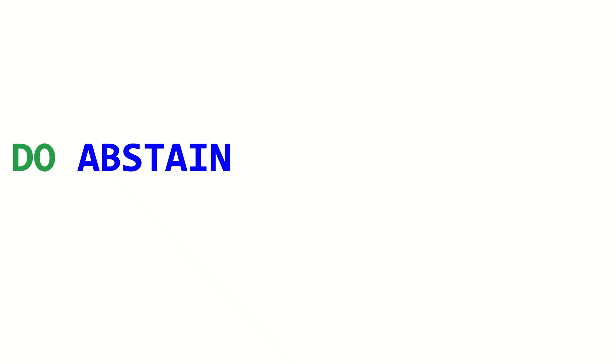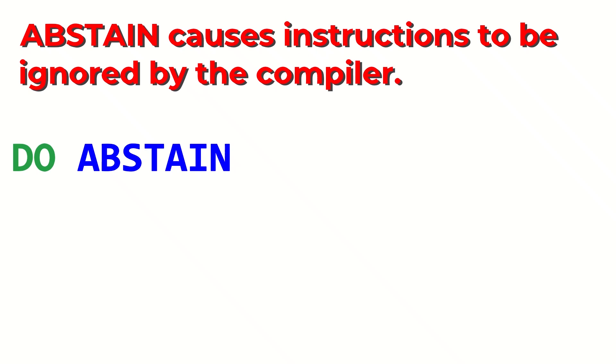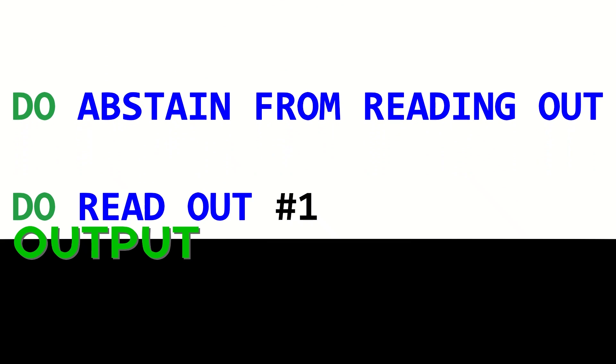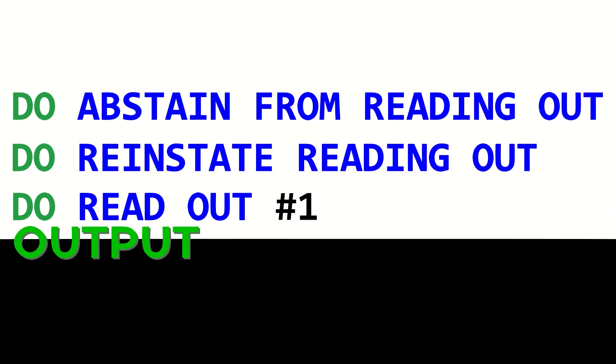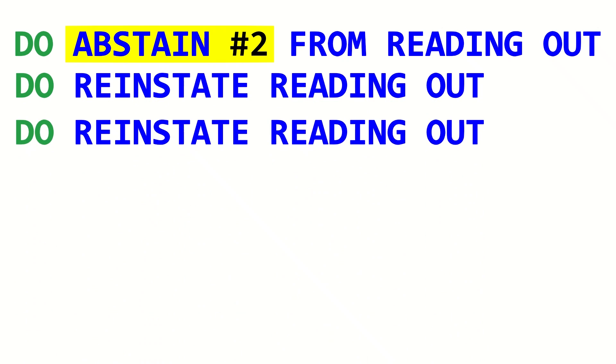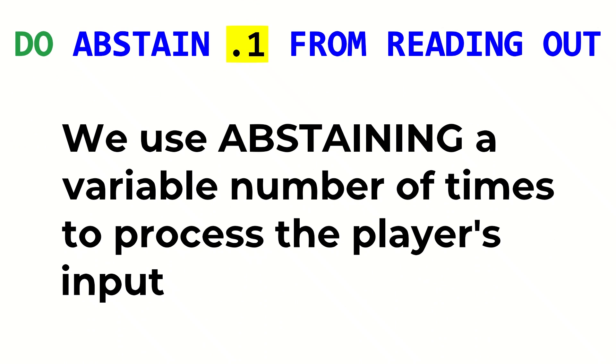In Intercal, you can abstain from running specific commands, which causes the compiler to ignore those commands. So if you abstain from reading out, any subsequent readouts will not happen. If you're going to criticize me for giving you an abstinence-only education, you should know you're able to unabstain commands by reinstating them. When I wrote my first programs in Intercal, I didn't know that when you abstain from something, you're able to specify how many times you abstain. If you abstain mesh 2, for example, you will need to reinstate the command twice in order to use it again. This constant can be replaced by a variable, and that's how we use the player's input to determine the game's next course of action.